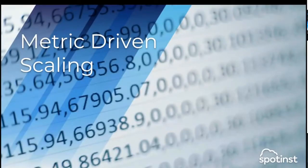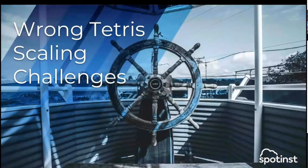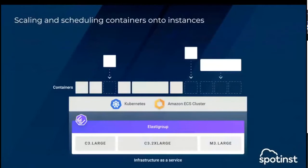Now we have a cluster and we need to scale it. The most common way is metric-driven scaling. When a given metric meets its threshold — say CPU or memory — we scale accordingly. For example, whenever we're over 80% CPU, we want more instances; whenever we're below 30% CPU, we want fewer instances. But the problem with containers is that this creates what we call Tetris scaling challenges.